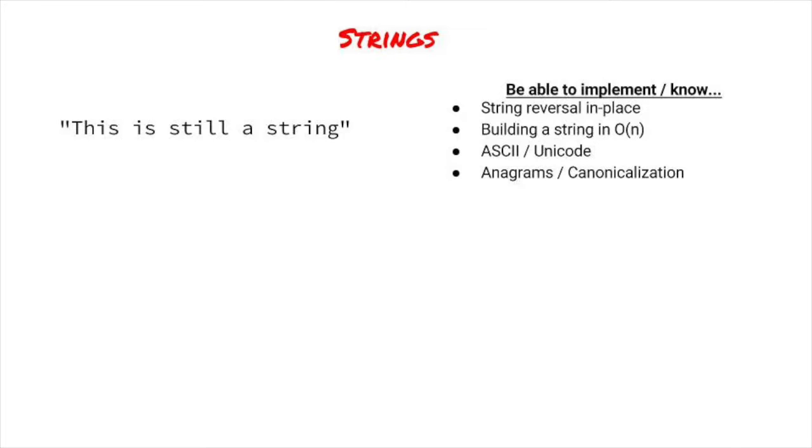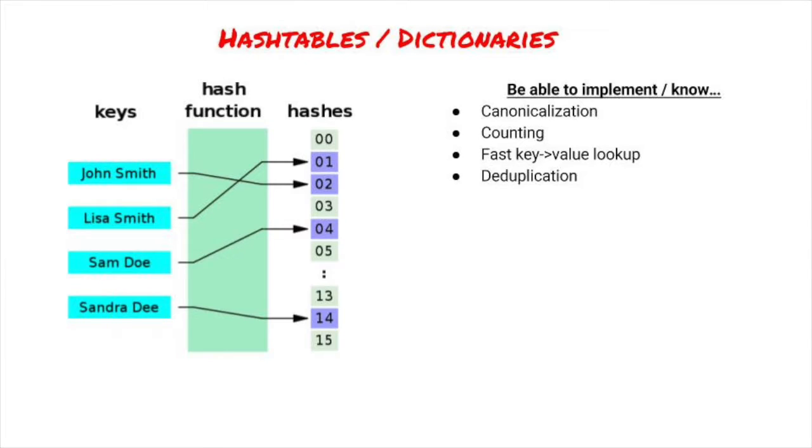Speaking of which, let's talk about hash tables. With canonicalization, you can use a dictionary to find objects that canonicalize to each other. Use the canonical form as the key and the list of objects as the value. This is useful for anagrams and other problems that require canonicalization. You should also be able to use a dictionary to implement counting to see how many of an item you have. You should know how to use dictionaries for fast lookup of keys to values you care about. Actual dictionaries are an example use case here. The word is the key and the definition is the value. Finally, know how to use a set or hash table to deduplicate items.